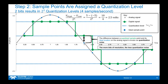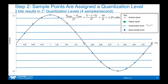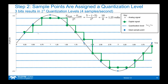Let's see how the addition of more bits results in a better representation of the signal. With three bits of resolution, we have two-to-the-three, or eight quantization levels. Spread over the 10-volt range, those eight quantization levels occur every 1.25 volts. We start sampling at 0.25 seconds, and the nearest quantization level to the analog signal falls right here. The same applies at 0.75 seconds, one second, and so on — until now we have a three-bit digital signal representing the analog signal.